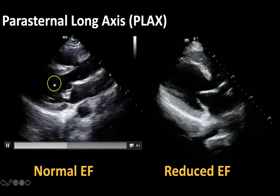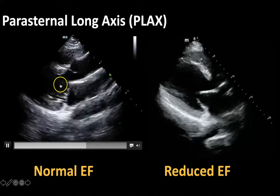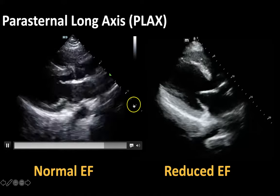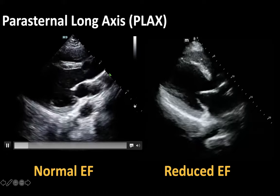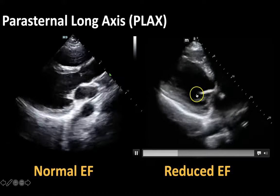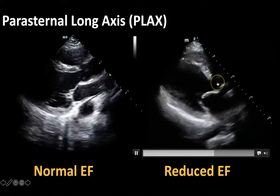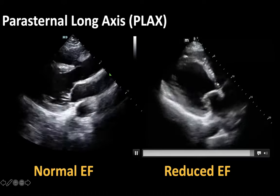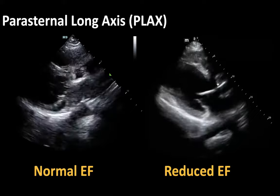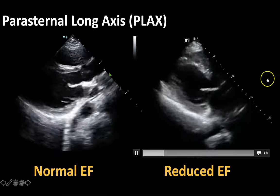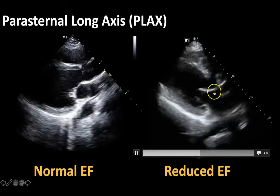This will become more obvious when I show you the second heart and you compare the squeeze between these two hearts on the screen. This is another parasternal long axis view, and I want you to draw that imaginary line in the middle of that left ventricle.